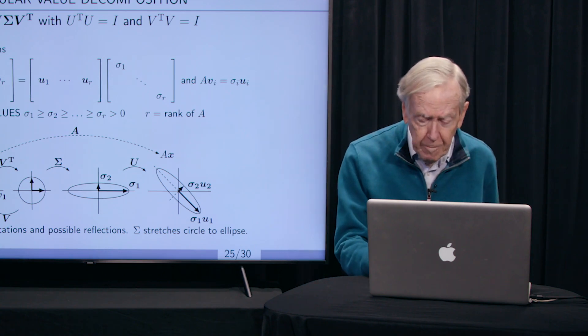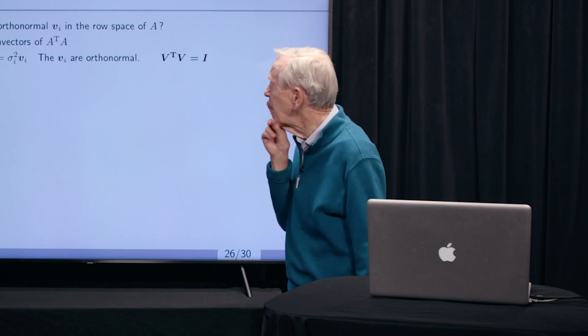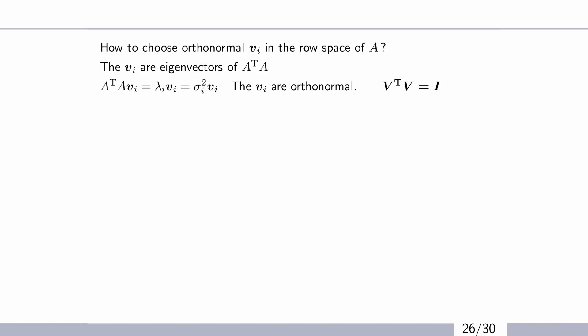Now let me just show you where they come from. So how to find these V's? Well, the answer is, if I'm looking for orthogonal vectors, the great idea is find a symmetric matrix with those eigenvectors. So these V's that I want for A are actually the eigenvectors of this symmetric matrix, A transpose times A. That's just nice.